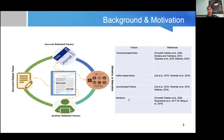We also have altmetrics. Altmetrics is about how to analyze the impact of an article online — like how many times an article was seen, downloaded, or shared. These are basically the areas we are going to talk about today. Mainly, we have categorized the document-related factors, and I'm going to have a more detailed discussion on these shortly.